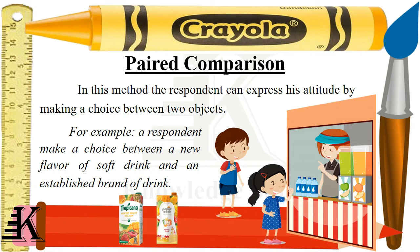What do we do? We will taste both — Tropicana and Paper Bowl. Then we will tell you whether Tropicana is better or Paper Bowl is better. For example, Tropicana is better. But every respondent can differ in their choice.